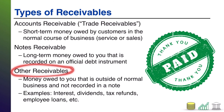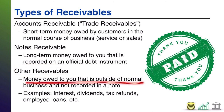Last up, other receivables. Other receivables are monies owed to you outside of the normal course of business and not recorded in a note. If it's in a note, it's going to be called a note receivable. If it's not in a note, but it is money owed to you for some reason, that's just going to get the name of the thing with the word receivable tagged on.